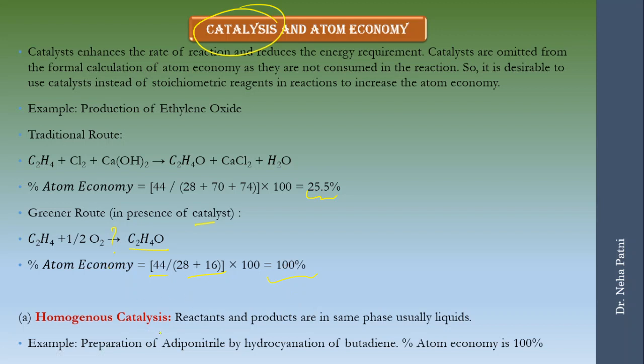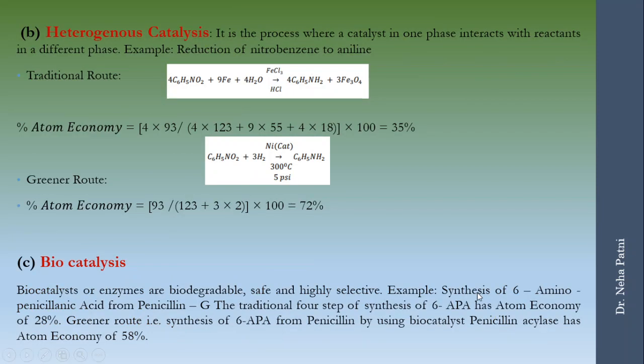Now the catalyst could be of many phases. If it is homogeneous that means homo means same, so if the phase is same that means the reactant and product are in same phase, both are liquids let's say. If this is the reaction example - production of adiponitrile - atom economy would be around 100 percent.